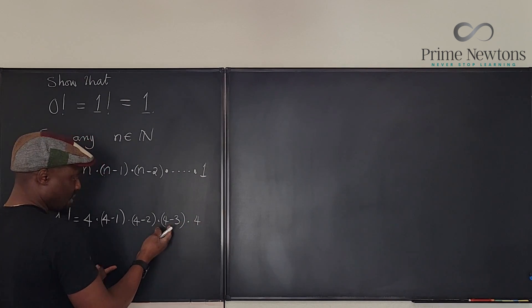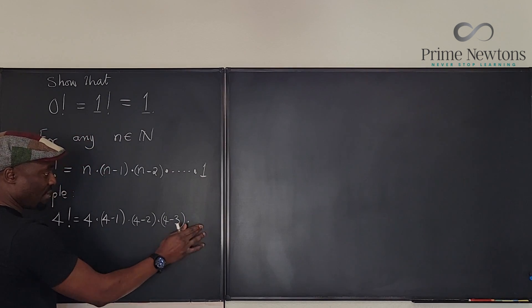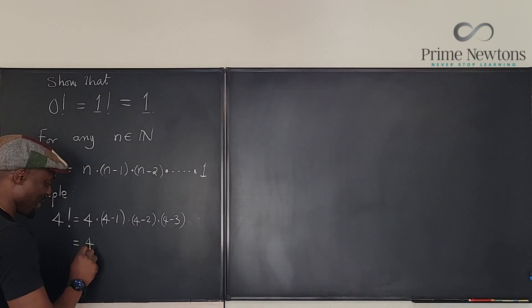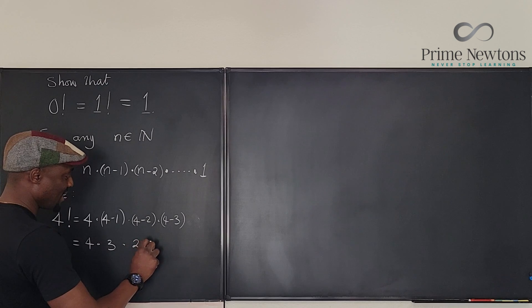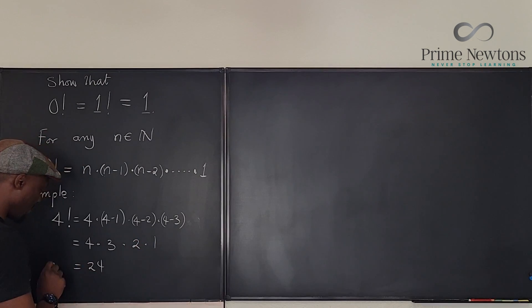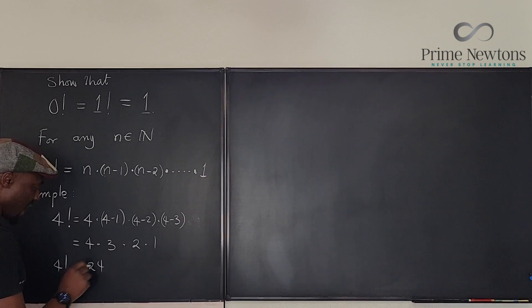Because we usually stop at 1, we're going to do 4 minus 3, that's 1, so we're going to stop here because that would be 1 actually. So this is going to be 4 times 3 times 2 times 1 and that gives us 24. So 4 factorial is actually 24.